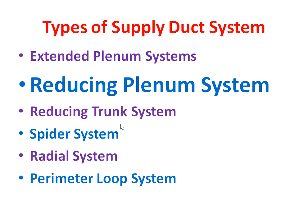The six types are: extended plenum system, reducing plenum system, reducing trunk system, spider system, radial system, and perimeter loop system. In the last video, number 35, we covered the extended plenum system. If you want to know more about it, please watch video number 35 of our playlist. In this video we will see the reducing plenum system.